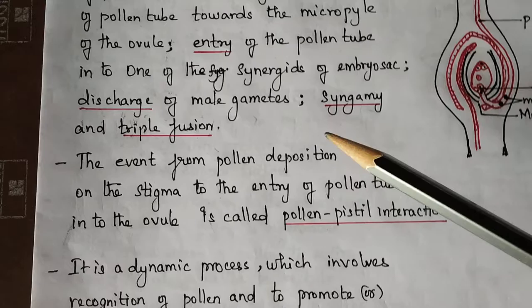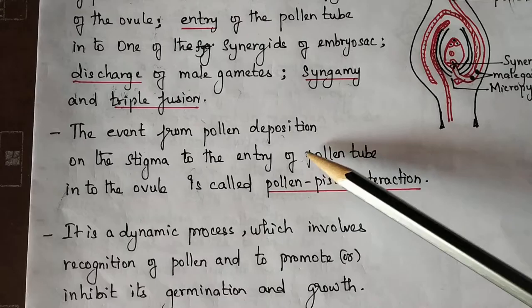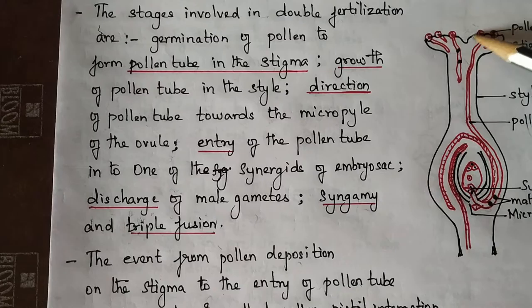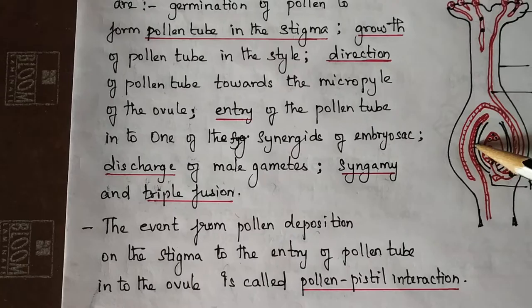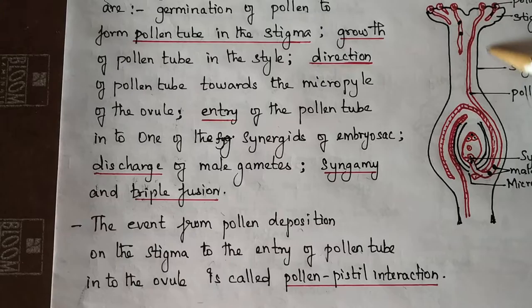Here are some definitions. The event from pollen deposition on the stigma to the entry of the pollen tube into the ovule is called pollen pistil interaction. The pollen tube enters into the ovule.